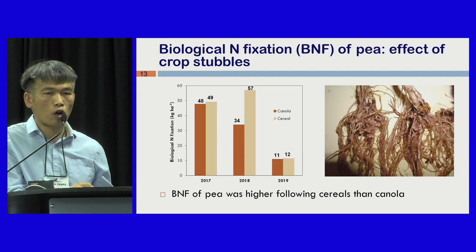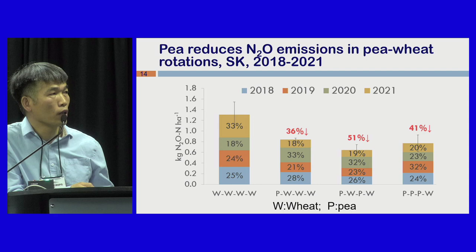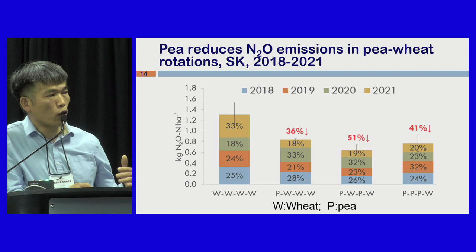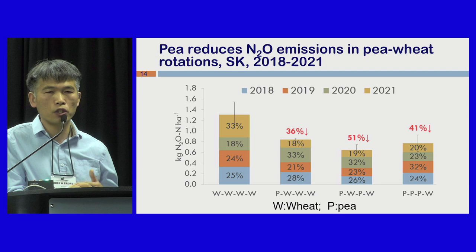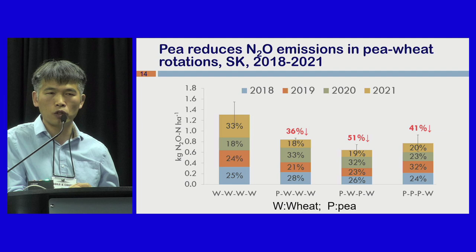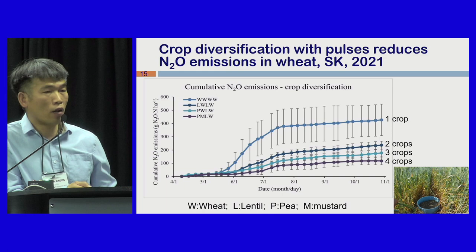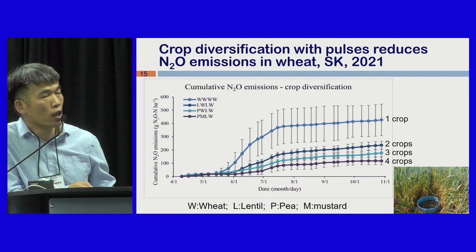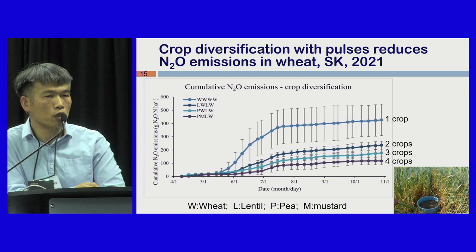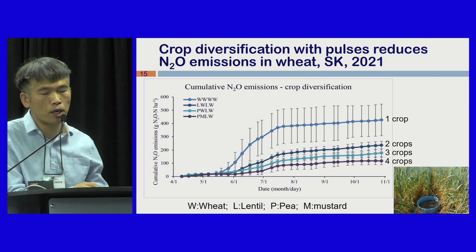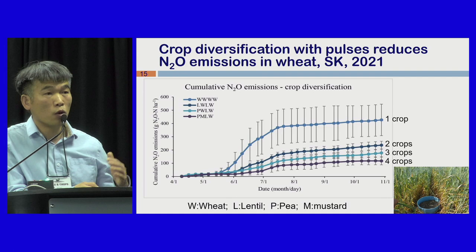We know nitrogen is important for crops but also causes environmental problems such as greenhouse gas emissions. Growing pulses in cereal rotations reduces N2O emissions significantly, and increasing the frequency of pulses further reduces greenhouse gas emissions. However, increasing intensity could cause disease problems, so that may not be a sustainable way to reduce emissions. A more effective way to reduce greenhouse gas emissions is to diversify your cropping system using pulse crops. As diversity increases from one crop to two, three, or four crops, N2O emissions are reduced while energy use efficiency increases.